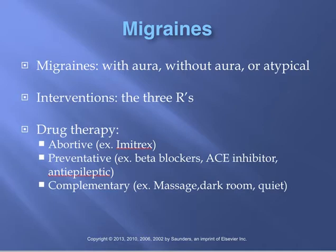We want to be careful with abortive therapy. For example, Imitrex and other medications in that same drug class should be used cautiously in patients with cardiovascular disease, Prinzmetal angina, chest pain, or a history of hypertension. The reason is that these abortive medications like Imitrex produce a vasoconstrictive effect, which could exacerbate any cardiovascular disease.